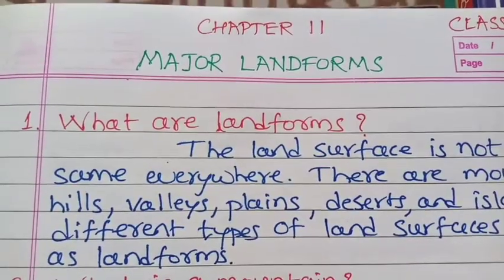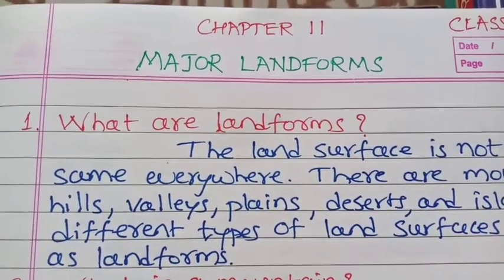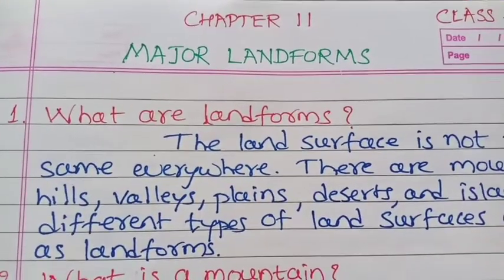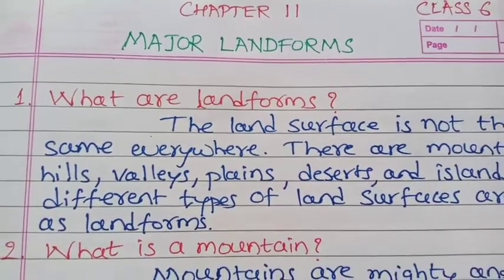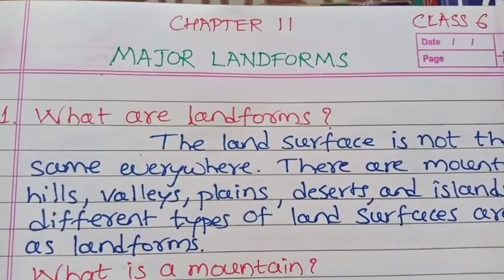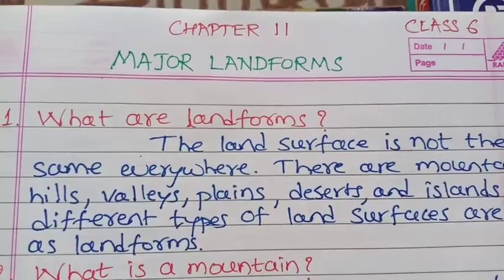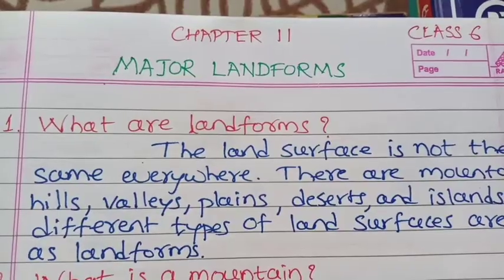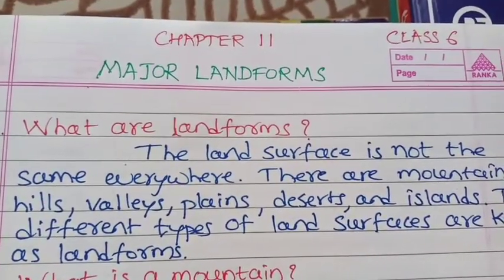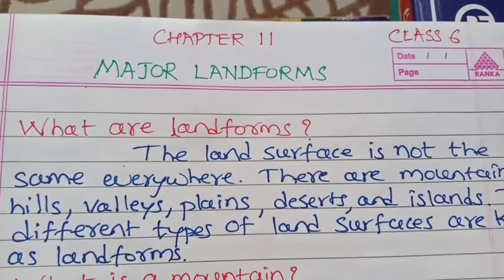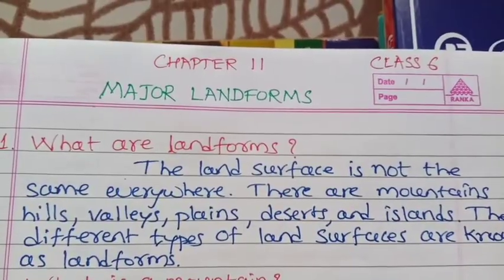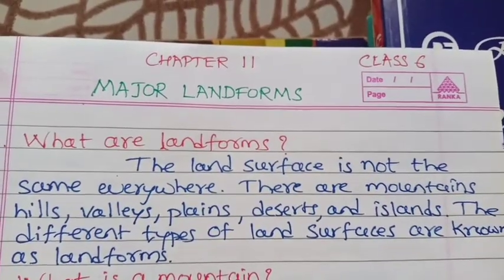What are landforms? The land surface is not the same everywhere. There are mountains, hills, valleys, plains, deserts and islands. The different types of land surfaces are known as landforms.